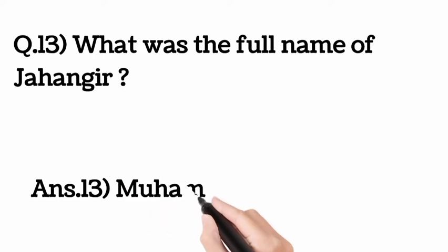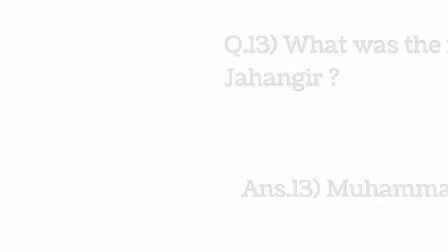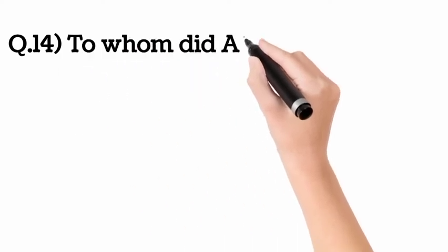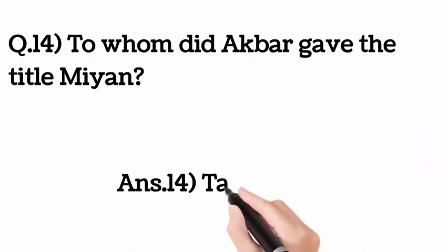of Jahangir? Answer: Mohammed Sultan Salim. Question number 14: To whom did Akbar give the title Miyan? Answer: